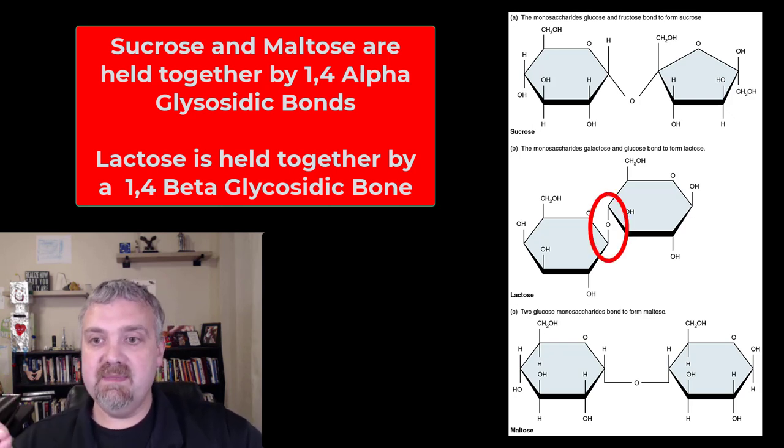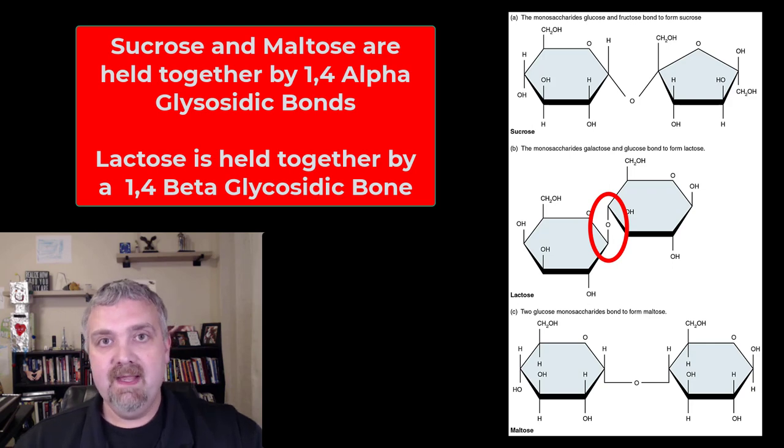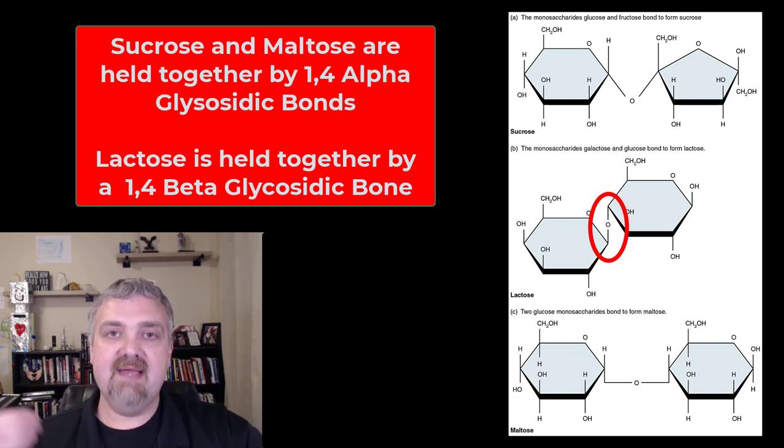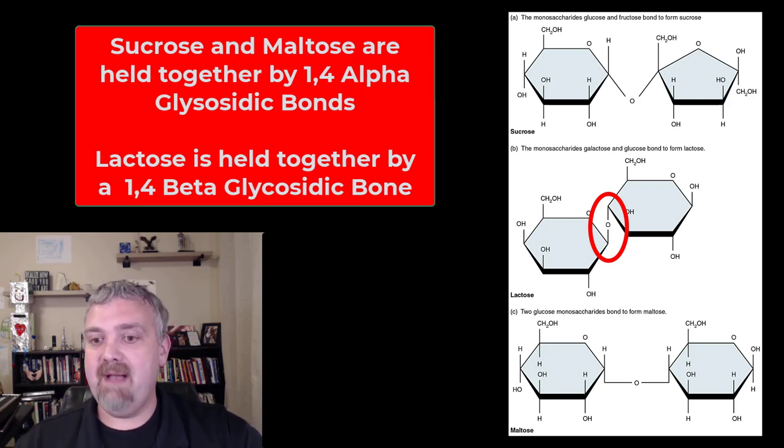The most important bond of these three is the one right there in the middle of lactose. It's actually a harder bond to get at, and it's harder to enzymatically break down. Between that and the fact that many humans don't have enough of the enzyme lactase, that's why you see many people are lactose intolerant, so we'll come back to that.